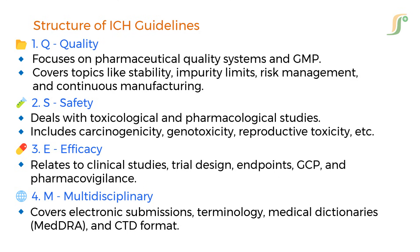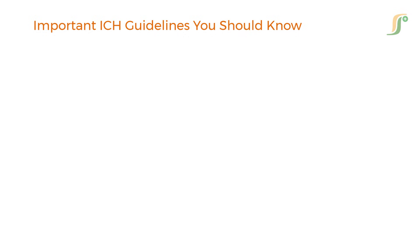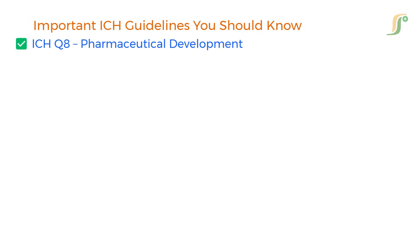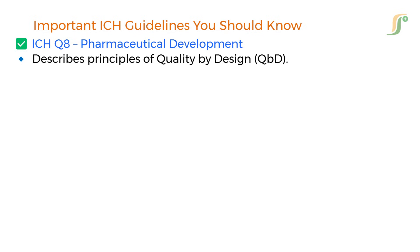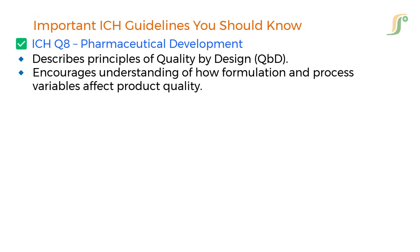Each guideline is given a code, like ICH Q8, E6, or M4. Let's now look at some of the most critical ones. ICH Q8 — Pharmaceutical Development — describes principles of Quality by Design (QbD).